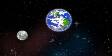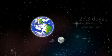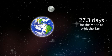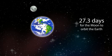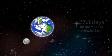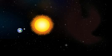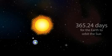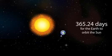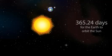The Moon rotates around the Earth. The Moon takes approximately 27.3 days to complete one orbit of the Earth. The Earth rotates around the Sun. The Earth takes approximately 365.24 days to complete one orbit of the Sun.